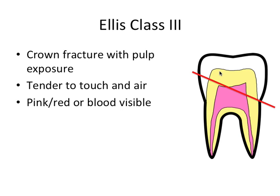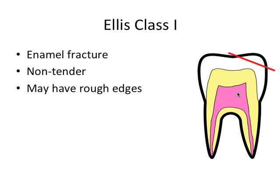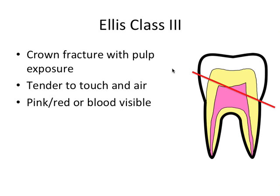Ellis class 3 involves the enamel, the dentin, and the pulp. One easy way to remember this is that Ellis class 1 involves one layer, 2 involves two layers, and 3 involves all three layers of the tooth. This tooth will also be tender to touch and air because the pulp is exposed, and you may see a pink or red color or even blood. Treatment involves vital pulp therapy or root canal therapy, depending on the stage of tooth development — open versus closed apex — and the time between the accident and treatment. If the tooth is mature with a closed apex, root canal therapy is probably your best bet. If it has an open apex and is an immature tooth, vital pulp therapy may work, or if not, apexification to close off those apices.